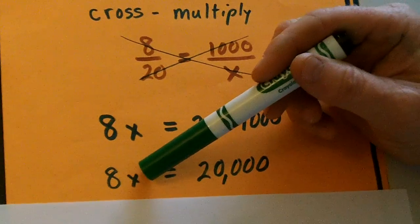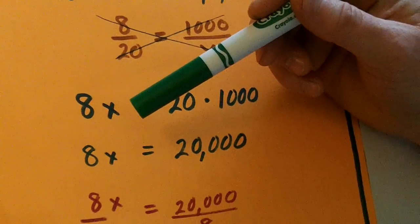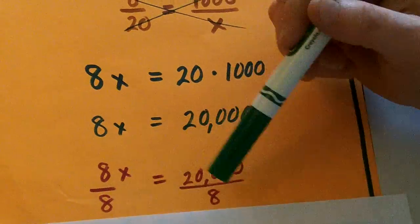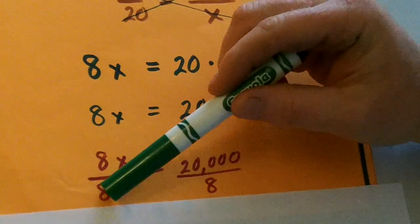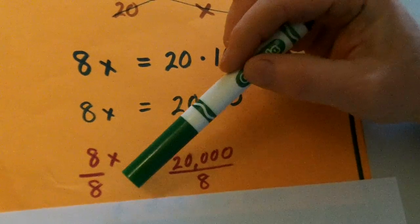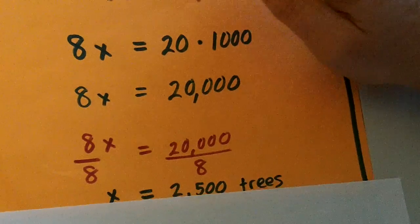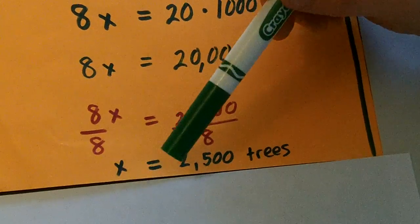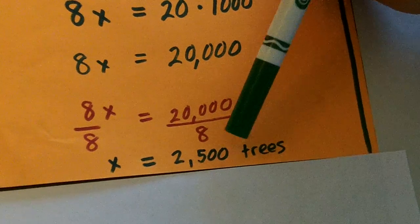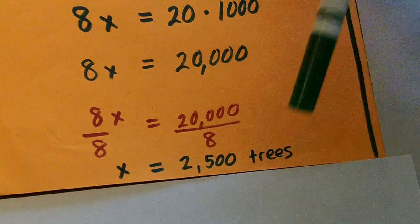Now, to get this x by itself, we're going to have to divide both sides by 8. And we know 8 divided by 8 is 1. 1 times x is x. So, then we're going to take 20,000 divided by 8. And then x is going to be equal to 2,500 trees.